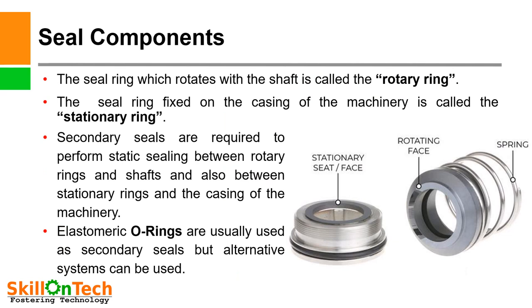The seal ring which rotates with the shaft is called the rotary ring. A picture of the rotating face can be seen here, accompanied with the spring. The spring provides pressure on the seal faces to mate with each other. The seal ring fixed on the casing of the machinery is called the stationary ring. Secondary seals perform static sealing between rotary rings and shaft, and also between stationary rings and the casing of the machines. Secondary seals are elastomers and O-rings. Elastomeric O-rings are usually used as secondary seals, but alternative systems can be used in place of O-rings.